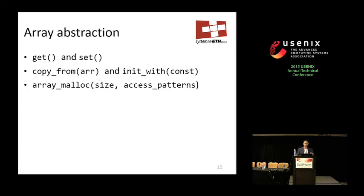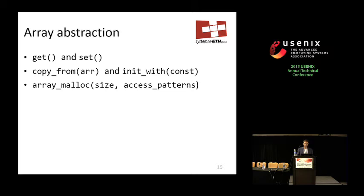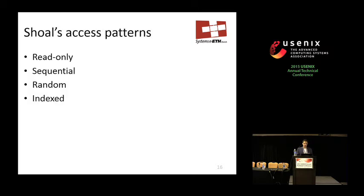Our memory abstraction is based on arrays, with get and set functions, a copy_from function, and an init function accepting a constant value. These high-level functions allow us to use hardware features like DMA engines. The key is an annotated malloc call that takes not just the size but also access pattern annotations, which help internally decide what to do. Access patterns are: read-only, sequential, random, and indexed.